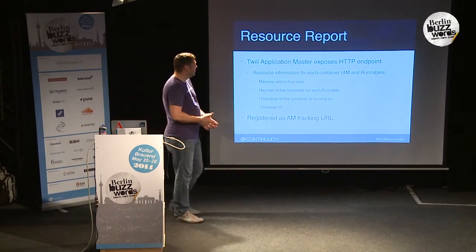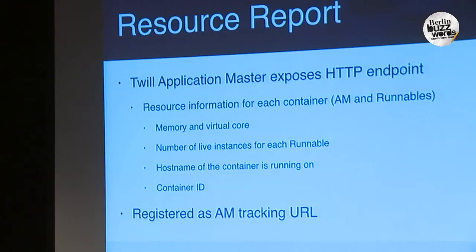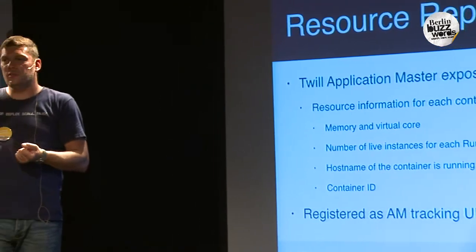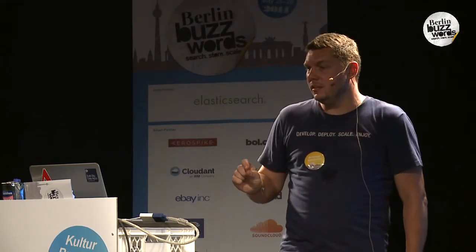Another feature is the resource report. When you start an application in the cluster, you don't know much about where it's running. Twill gives you this information as a resource report accessible via REST, telling you the current state of the application: memory usage, virtual cores, number of instances, how many are live and sending heartbeats, and the hosts where it's running. This REST endpoint is registered as the tracking URL in YARN, so you can click through in the YARN UI, and you can also get this information programmatically from your client.